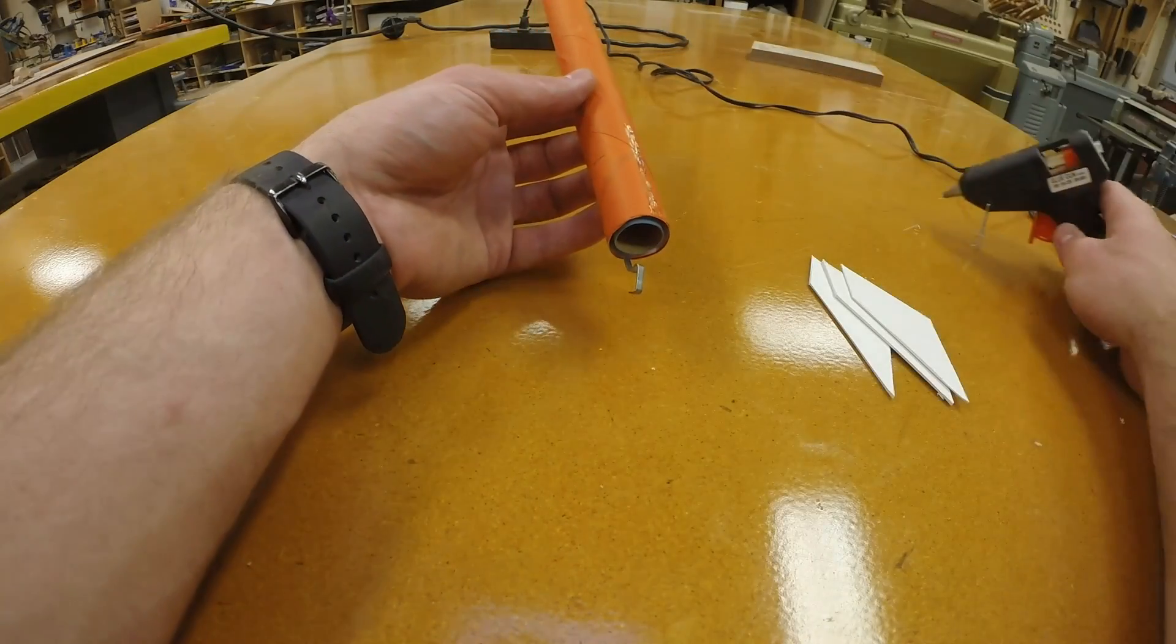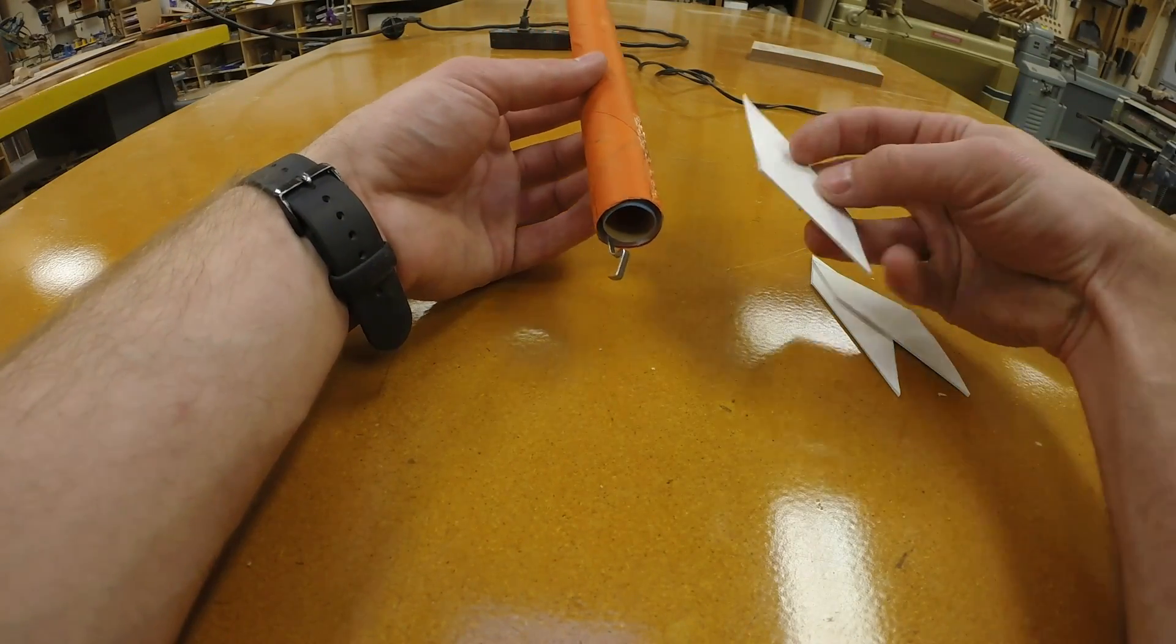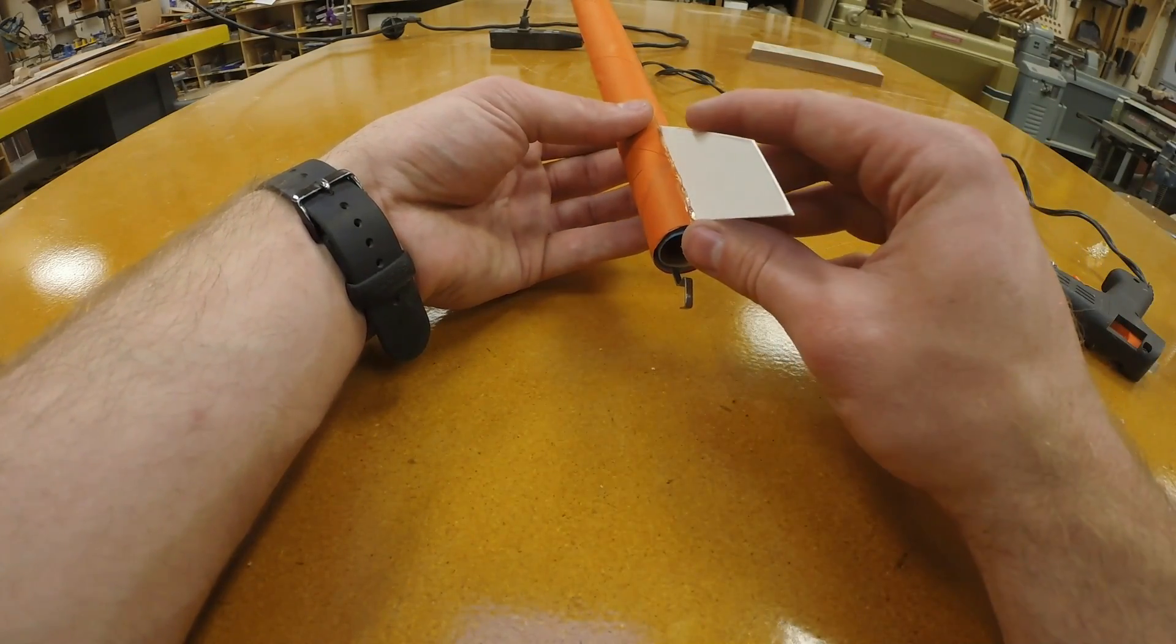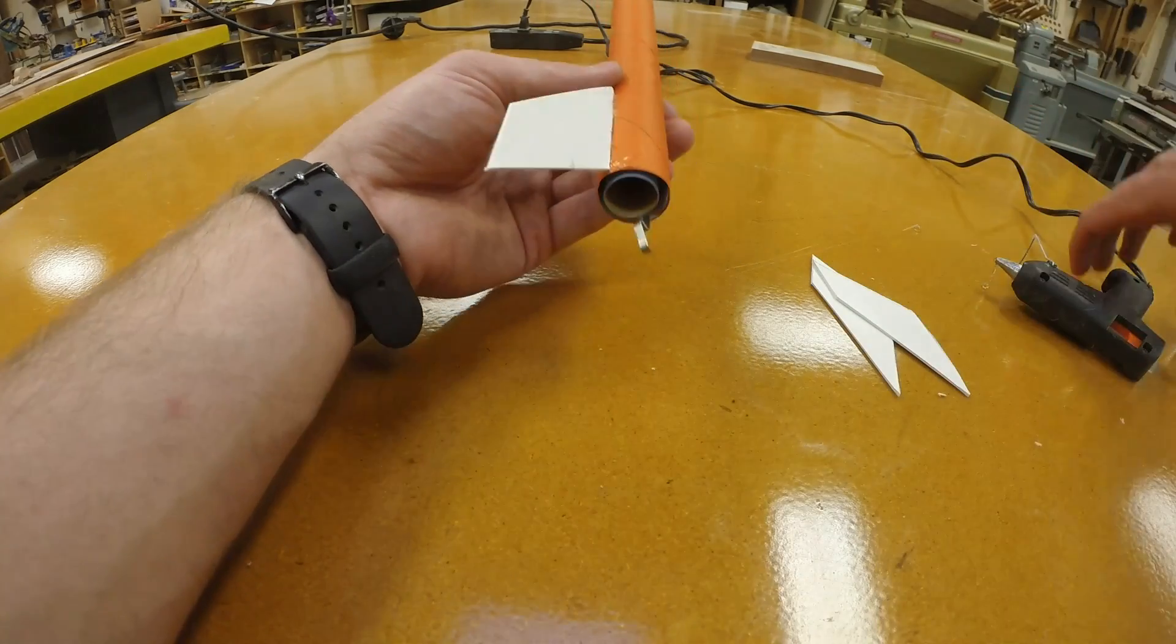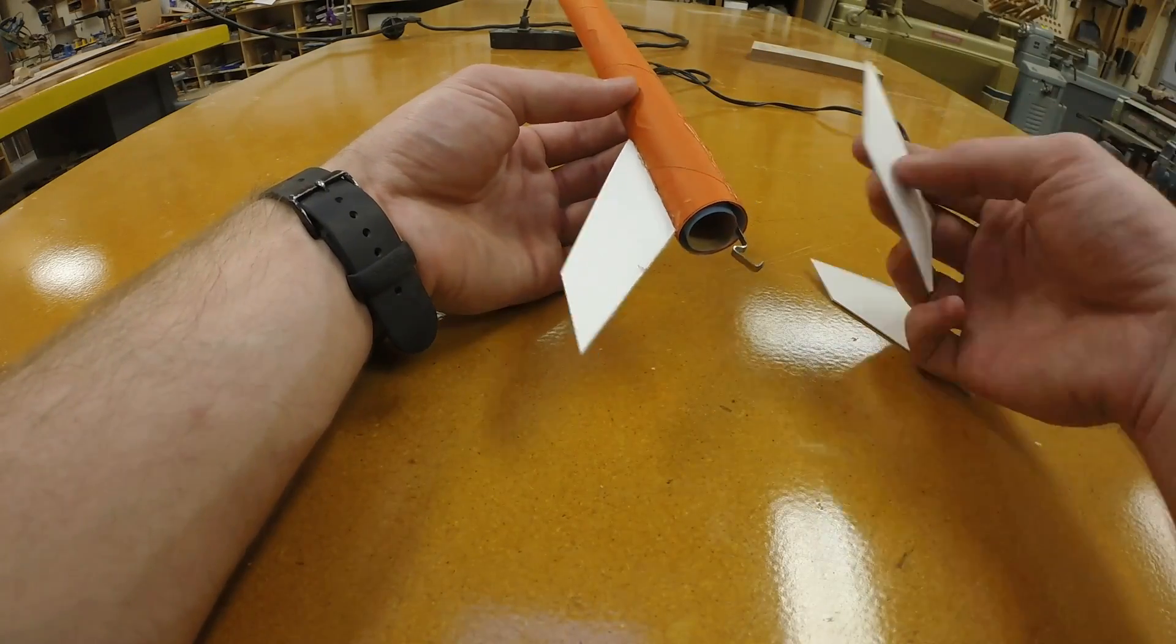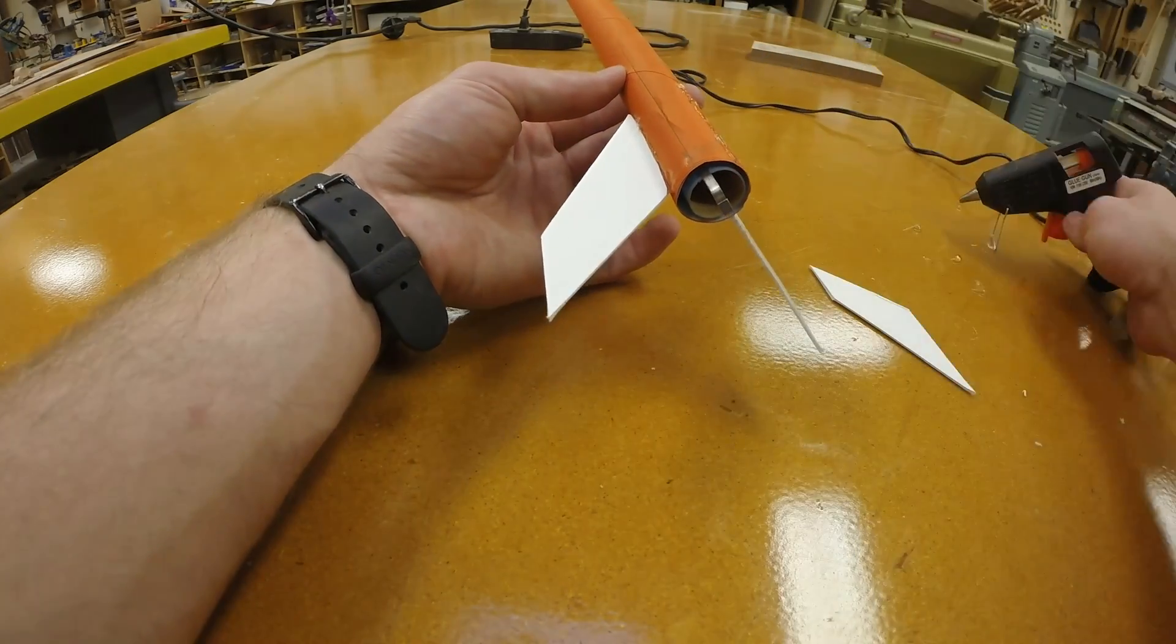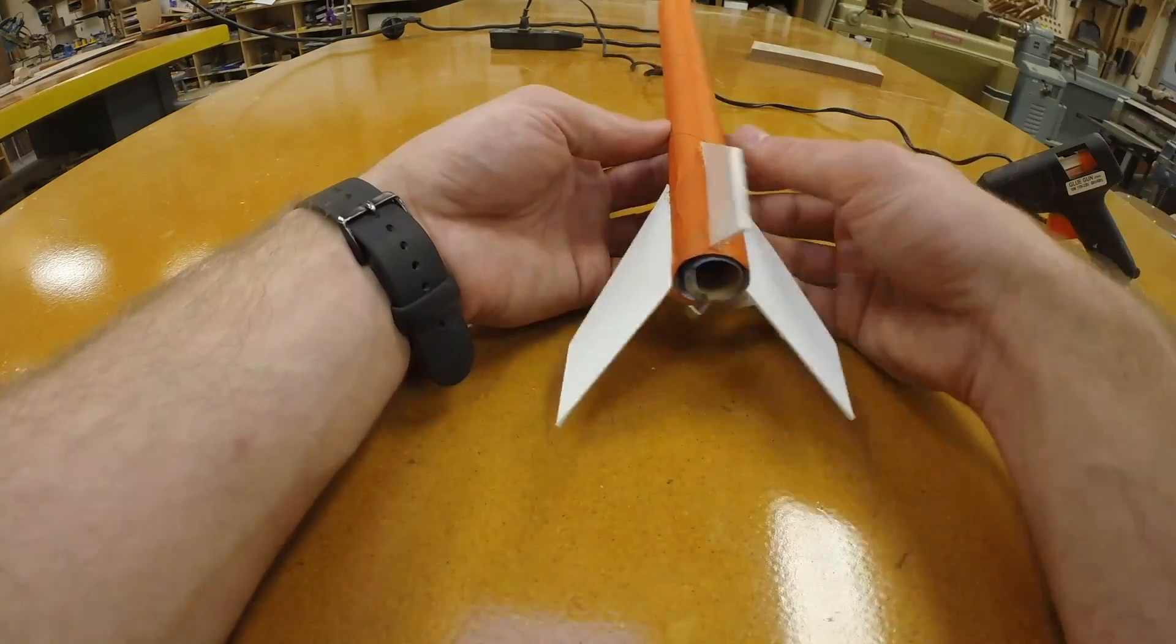Put a little bit of hot glue down one of the lines that you drew on the door frame for the fin. Then you're going to put the root edge of the fin into the hot glue. You don't have a whole lot of time so make sure that you line up the fin to make sure that it's really straight before the hot glue dries. Repeat this process for all three fins.